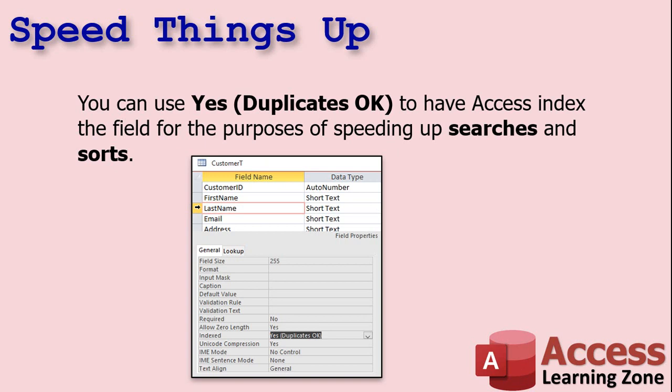You can also use yes, duplicates OK, to have Access index the field for the purposes of speeding up searches and sorts. For example, let's say you do a lot of searching on customers based on their last name. You may want to index that field but allow duplicates — you still want to allow multiple Smiths or Kirks. If you search on it a lot or sort on it a lot, you want to index it, and duplicates are okay.